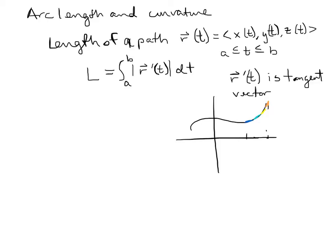Those A and B are not x-values — they're values of t. So t equals A is your start point and t equals B is your endpoint, and then you get the arc length of the path. It's much more difficult to figure out the length of a curving path than a straight line, and this integral is one way we can do it.